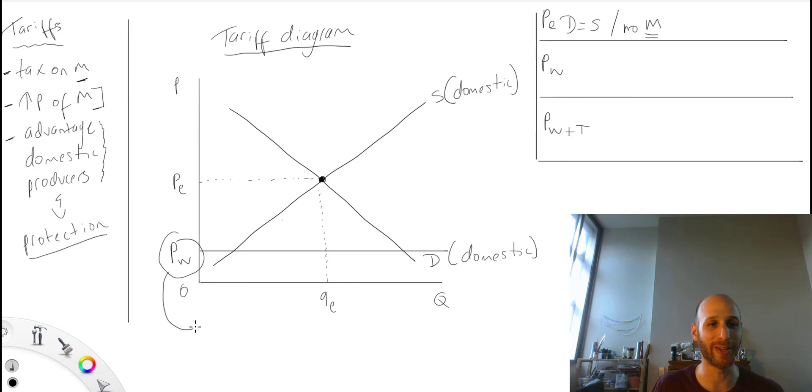You can see how much lower it is than if we satisfied everything domestically. Let's just draw some points. I've got that one there, I've got this one here.